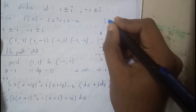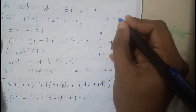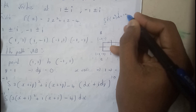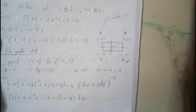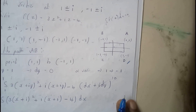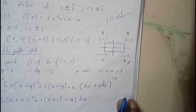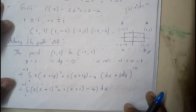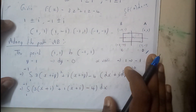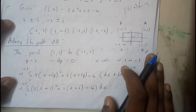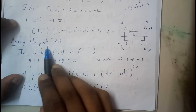Cauchy's integral theorem states that the closed contour integral of f(z) dz is equal to 0. By adding all the path integrals, I should get 0, which confirms the calculations are correct. I'll go through one path in detail and explain the remaining paths more quickly.